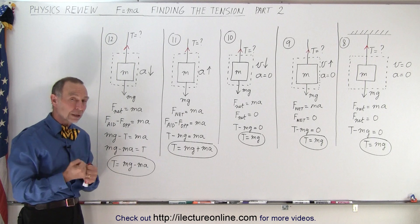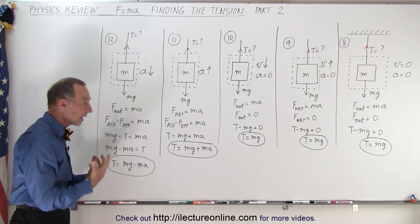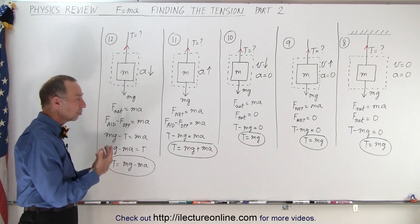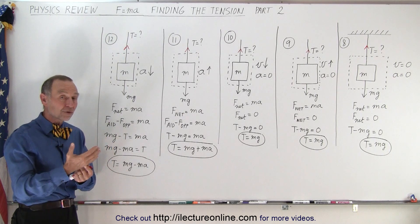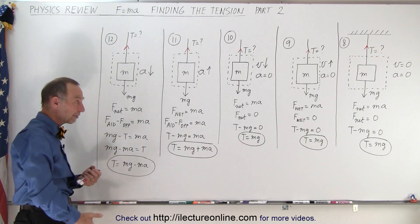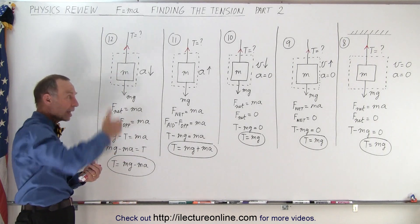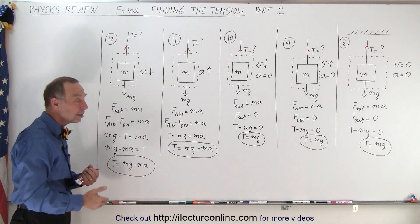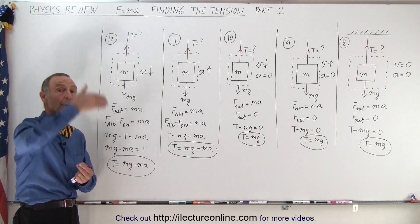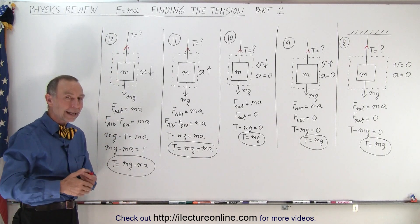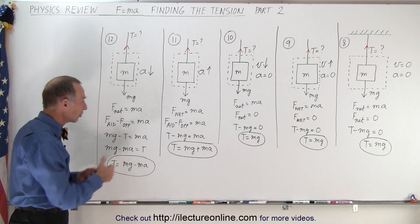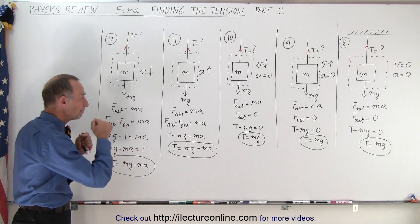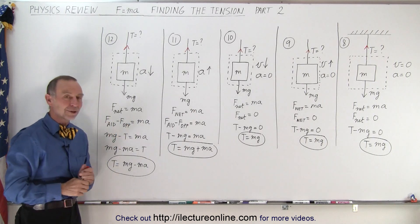So if you understand these five examples, that gives you a very strong foundation for understanding the tension on a string holding an object, or having an object go up or down at a constant speed, or go up or down at a constant acceleration. And that is how it's done.